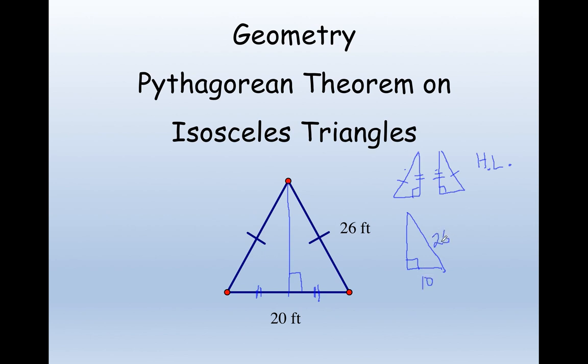this is going to be 26. I want to find that height. So I'm going to come over here, I'm going to do a squared plus b squared equals c squared, 10 squared plus b squared equals 26 squared, 100 plus b squared equals 676.